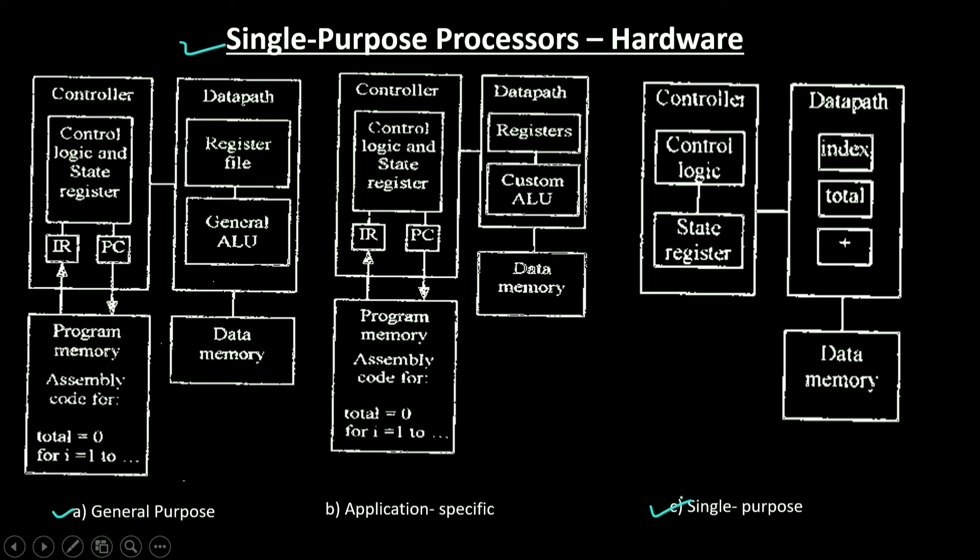Coming upon application-specific processors, an application-specific instruction set processor (ASIP) can serve as a compromise between the other processor options. An ASIP is a programmable processor optimized for a particular class of applications having common characteristics, such as embedded control, digital signal processing, or telecommunications. The designer of such a processor can optimize the data path for the application class, perhaps adding special functional units for common operations and eliminating other infrequently used units. Using an ASIP in an embedded system can provide the benefit of flexibility while still achieving good performance, power, and size.